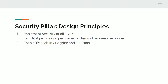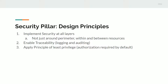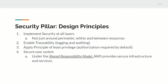The second design principle is to enable traceability, which comes out of the box with a lot of AWS's core services. The third is to apply the principle of least privilege — by default you can't do anything on any AWS service unless an admin specifically authorizes that action to a particular authenticated operator. AWS takes care of secure infrastructure and services, but it's up to you to secure your application, system, and architecture.